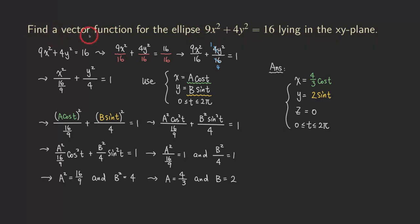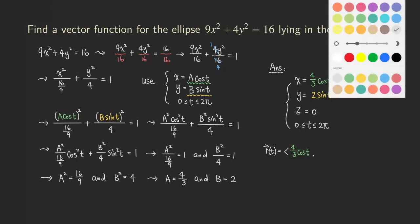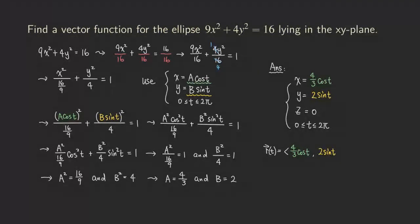The vector function r(t) equals (4/3 cosine t, 2 sine t, 0), where t is bounded from 0 to 2 pi. This is the answer in parametric equation form, and this is the vector form of the answer. That's it for this problem.